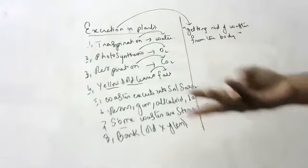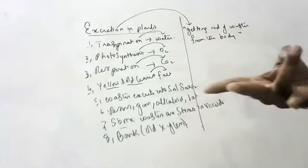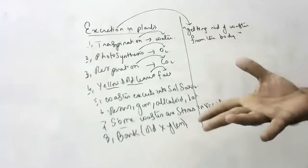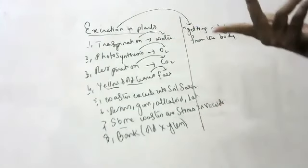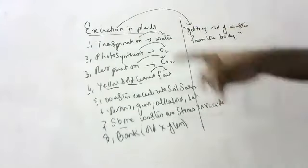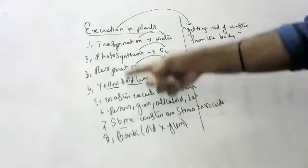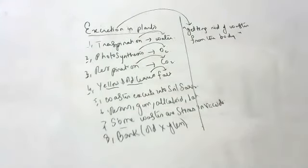If you see animals, kidneys, teeth, lungs, large intestine — all these are excretory organs. Whereas in plants, these are the different modes of excretion. Thank you.